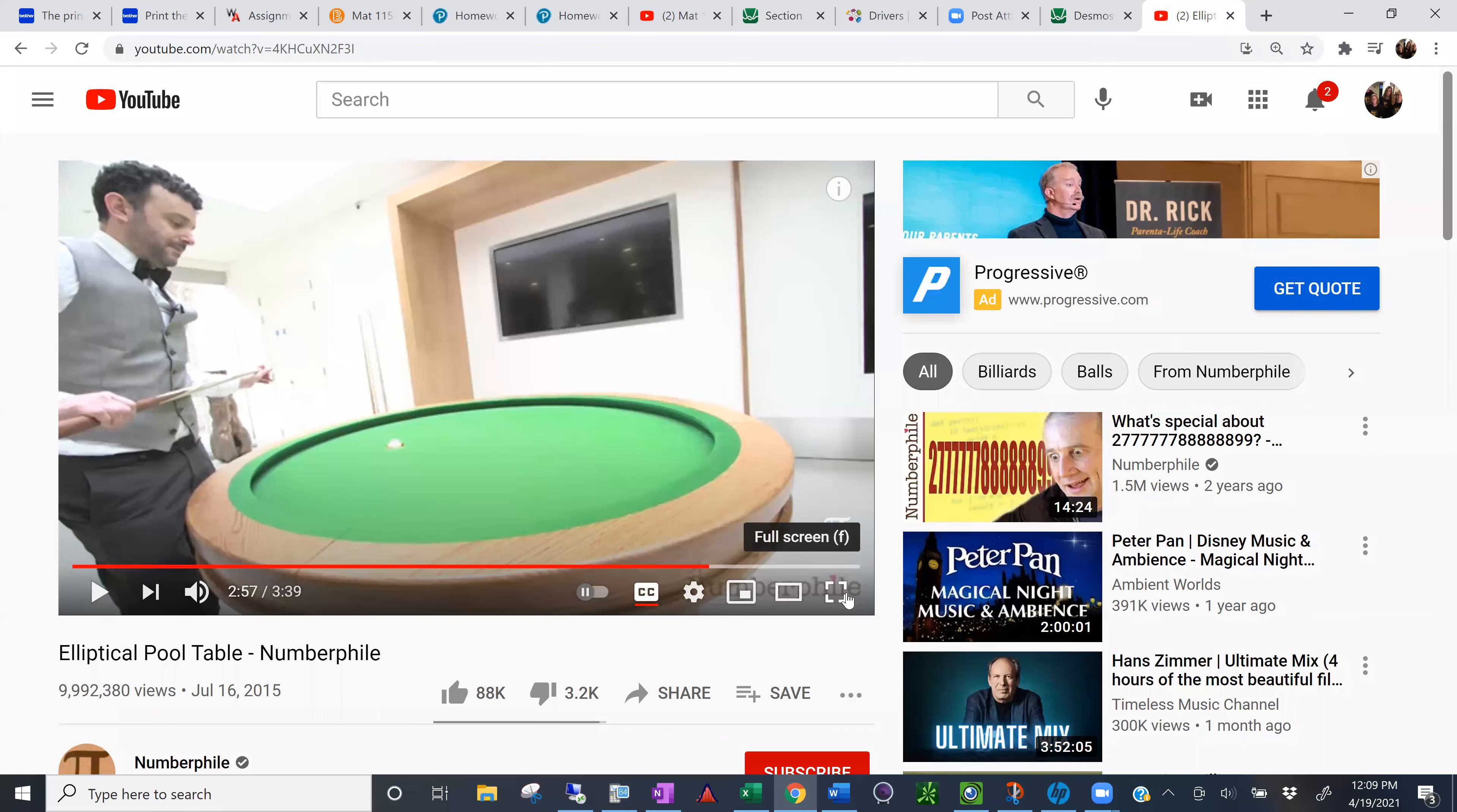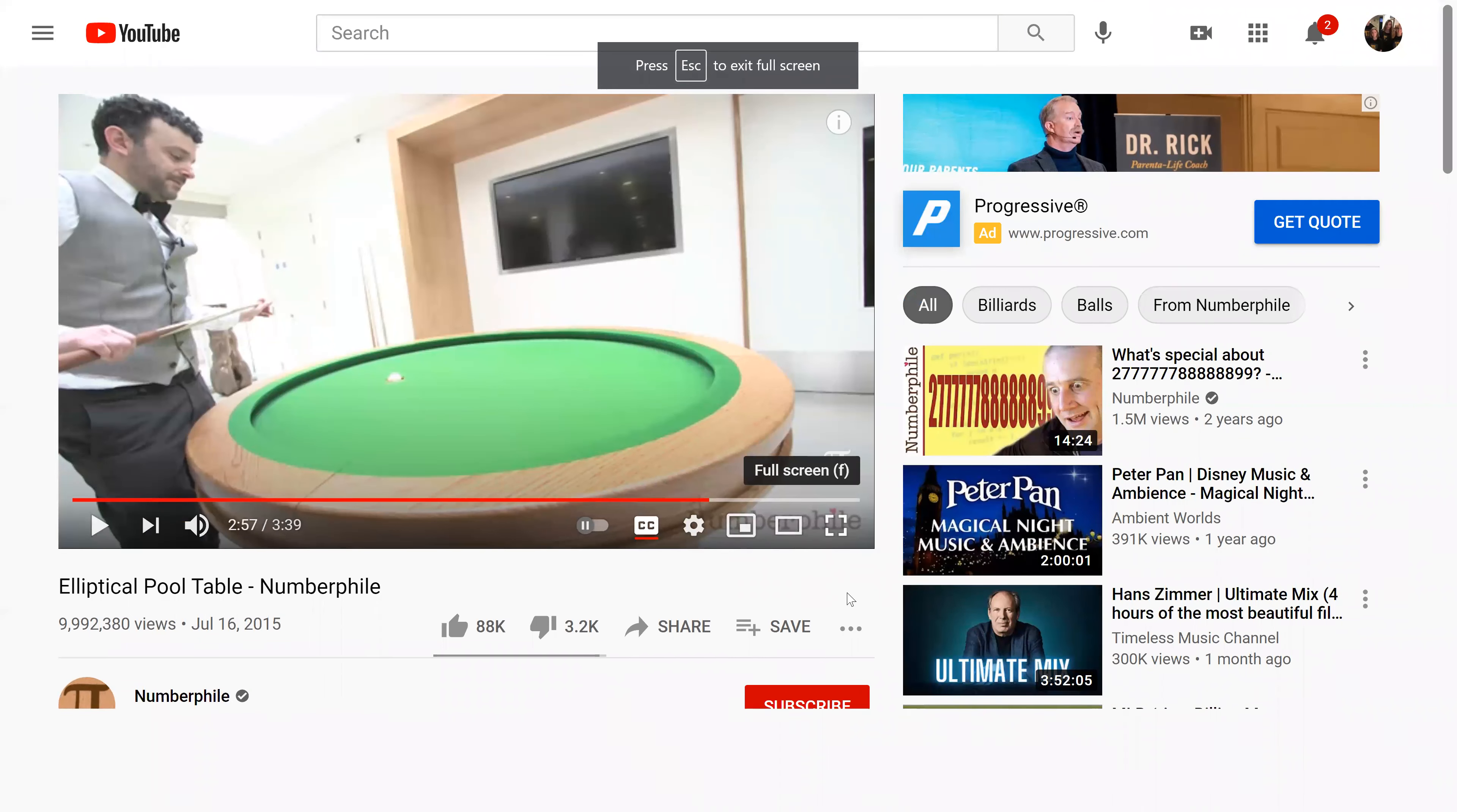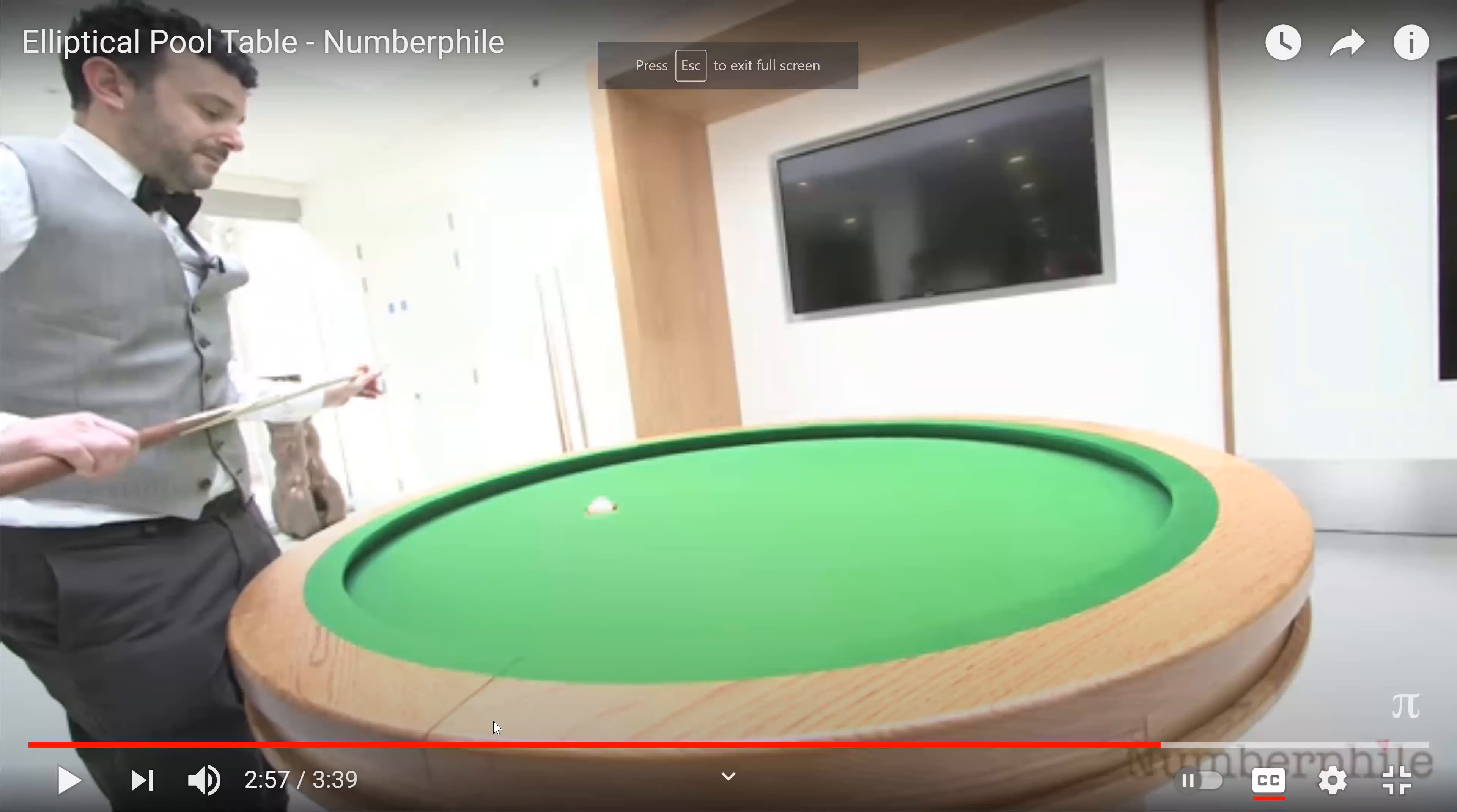There's your elliptical shape pool table. I don't know how much that would cost to build. It couldn't have been cheap. It's kind of cool.